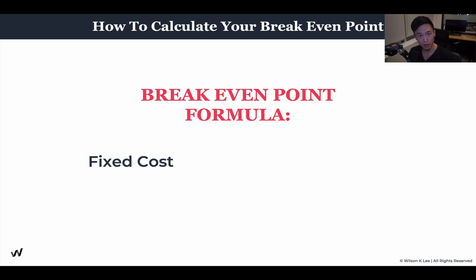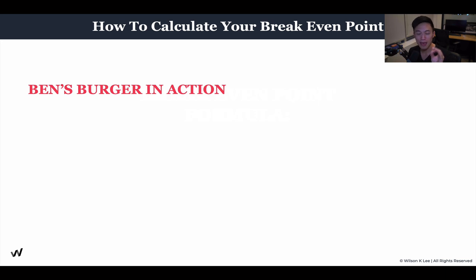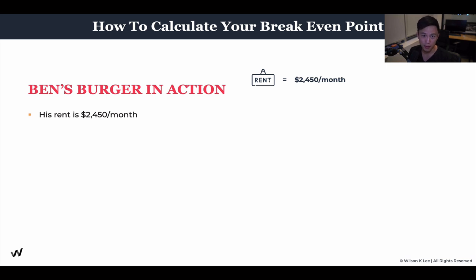This is the formula: fixed costs — and if you don't understand fixed costs, go back to the previous lesson where we talked about the difference between variable costs and fixed costs. The formula is: fixed costs divided by one minus variable cost percentage. I know this sounds complicated, and that's the reason why we go back to Ben's Burger. If you don't know Ben's Burger, go back to lesson one and go through this whole module in sequence.